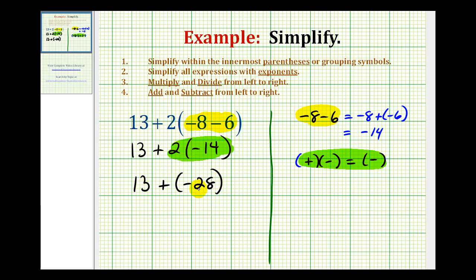The last step is to perform this addition, but now we're adding integers with different signs. If we think of this logically, 13 plus negative 28 should be negative, because the negative 28 is going to outweigh the positive 13. So this will be negative.